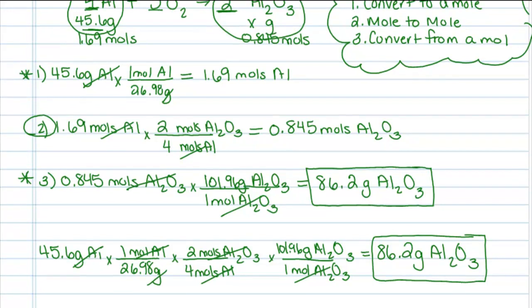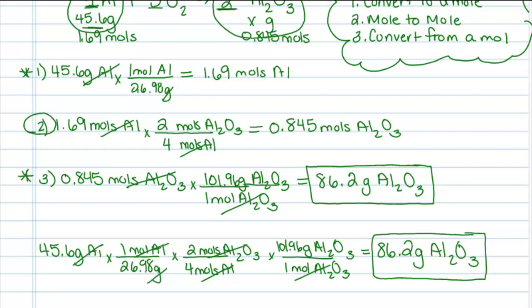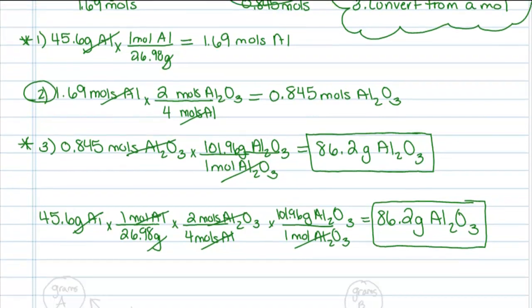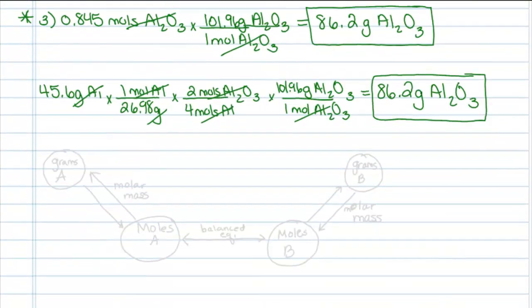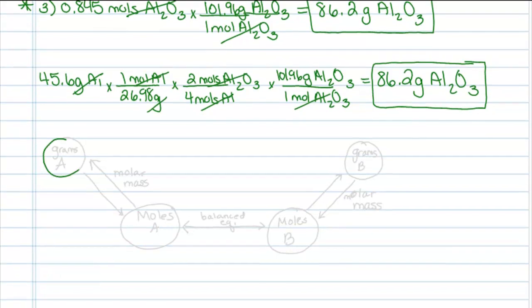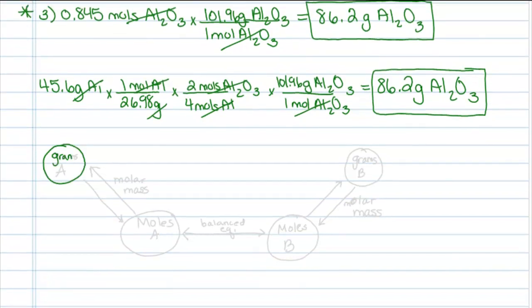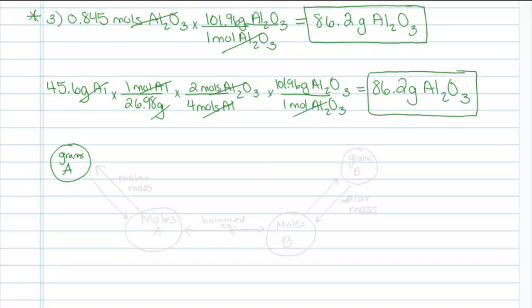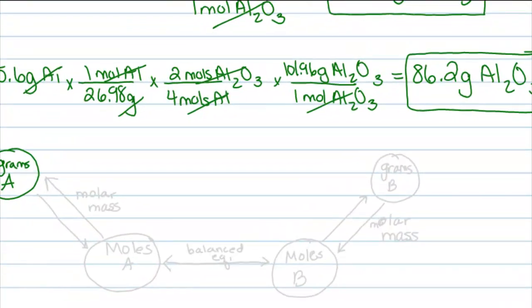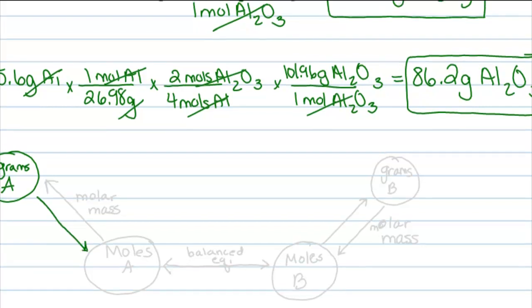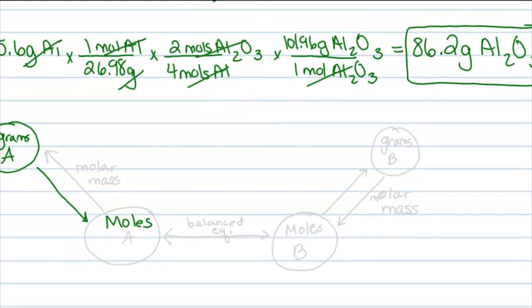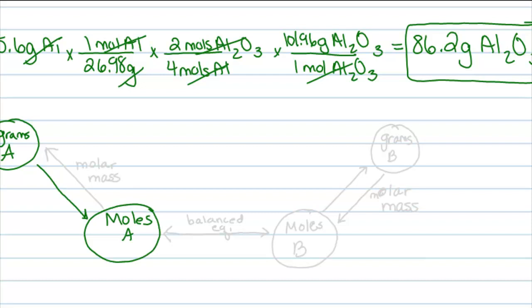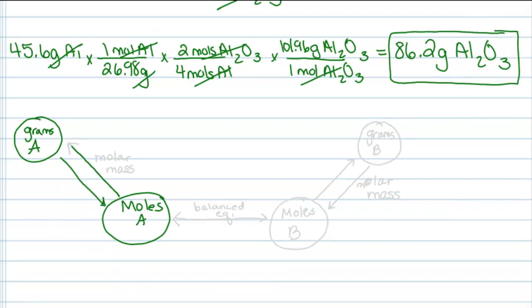I do want to talk a little bit about visualizing what it is you're doing. We have, imagine over here, grams of substance A. And we can convert from grams of substance A to moles of substance A. We use our molar mass to do this. We can convert from moles of A to grams of A. This is a step we learned in Module 2.